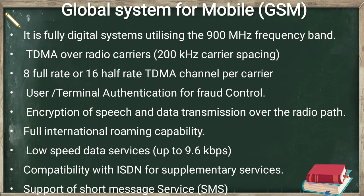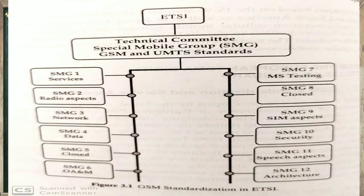GSM was developed by ETSI, the European Telecommunication Standards Institute. Features include encryption of speech and data transmission over the radio for both sides, full international roaming capability, low speed data services with a minimum data speed of 9.6 Kbps, compatibility with ISDN for supplementary services, and support for short message services.